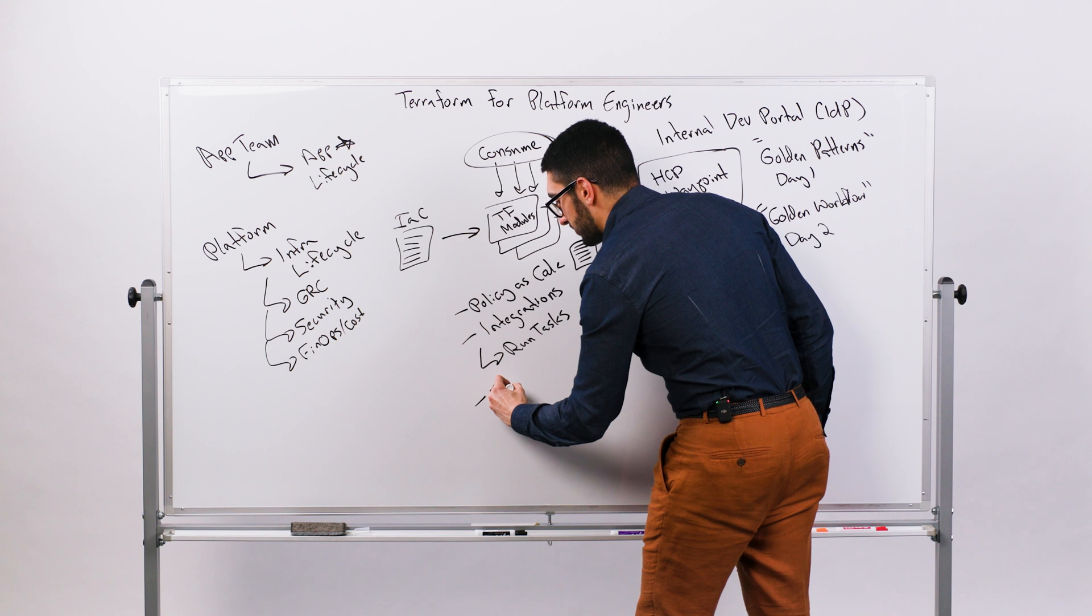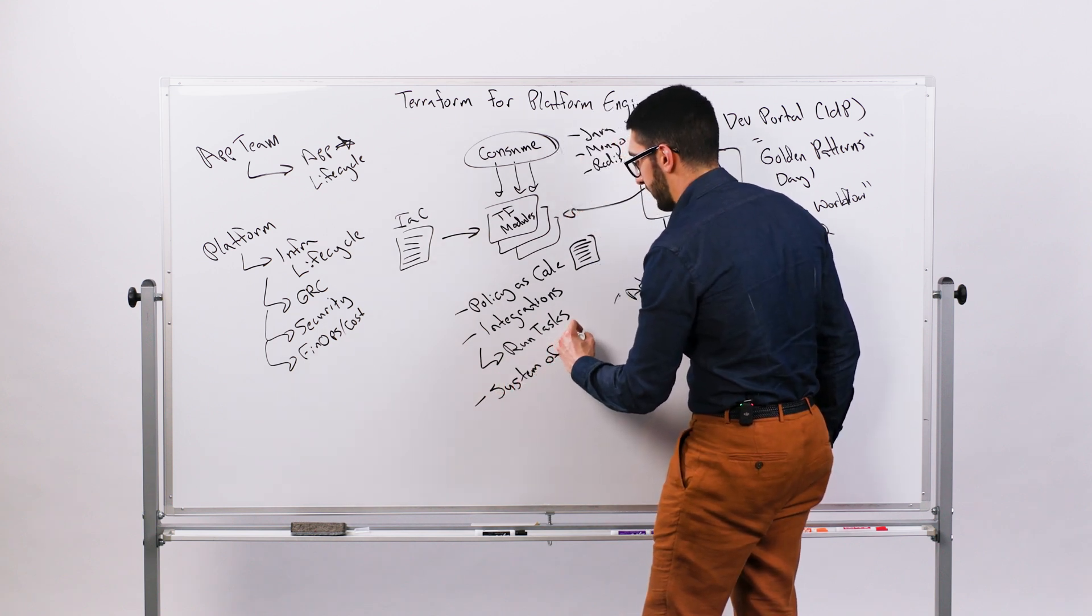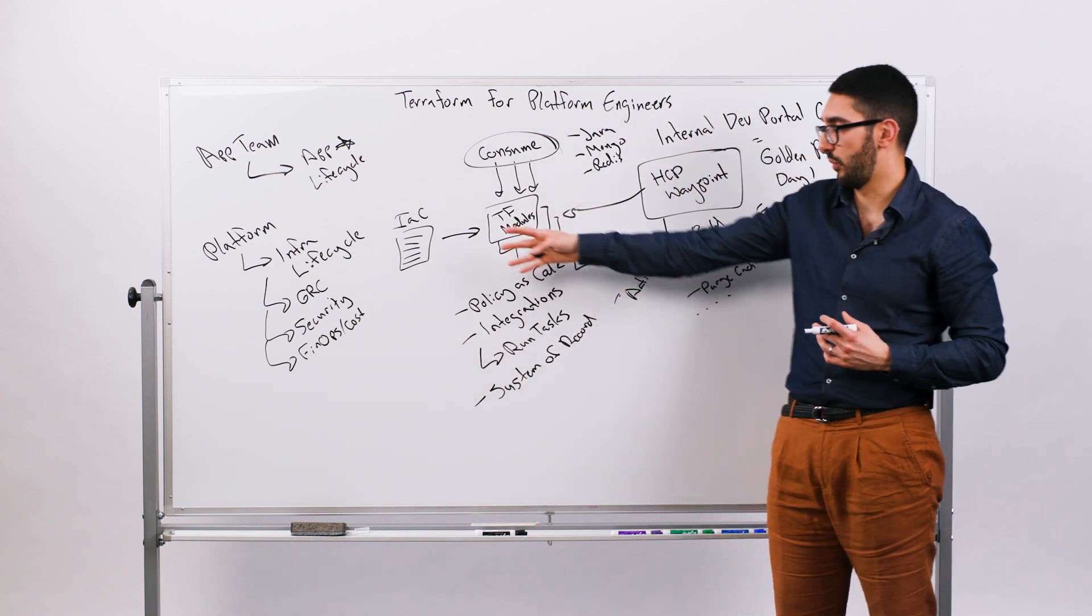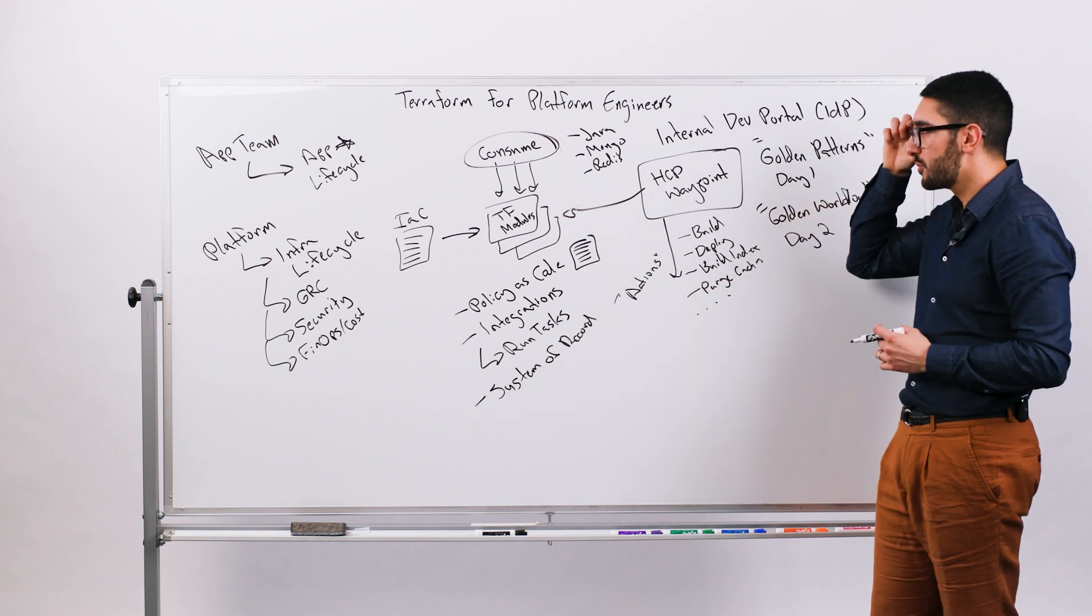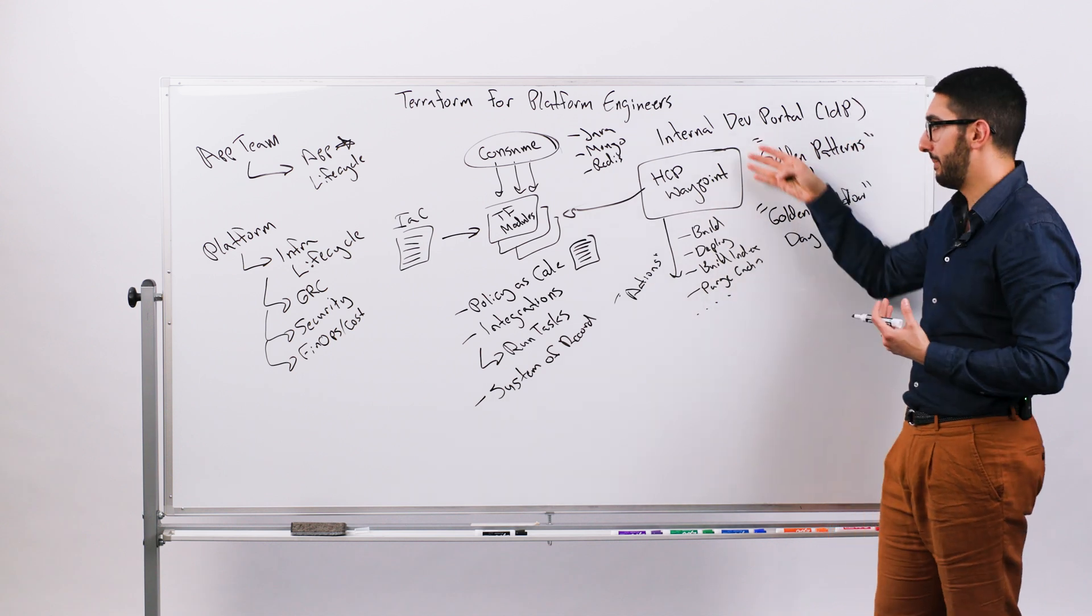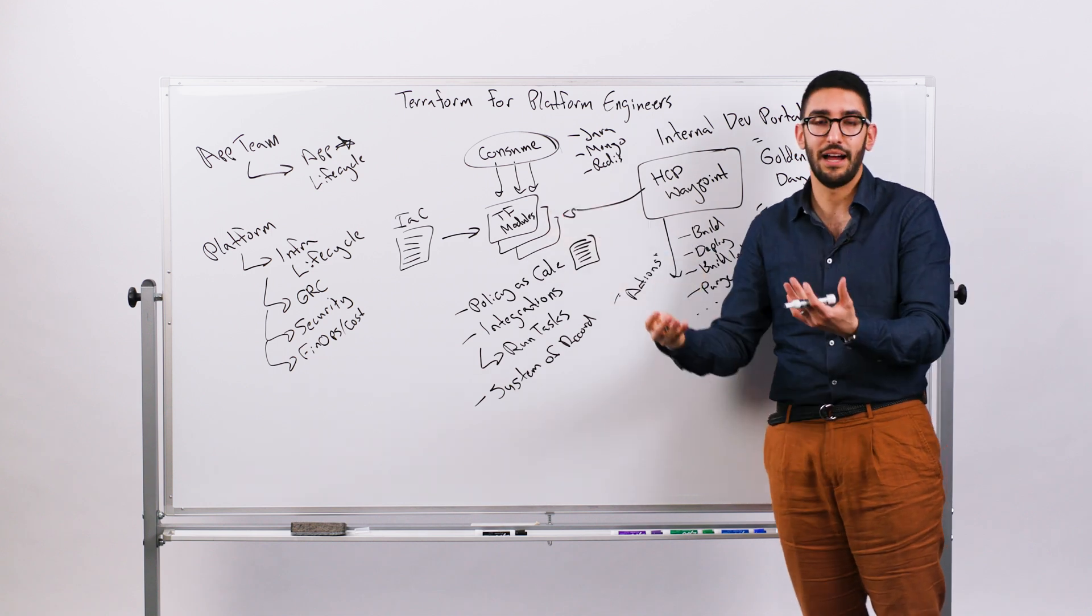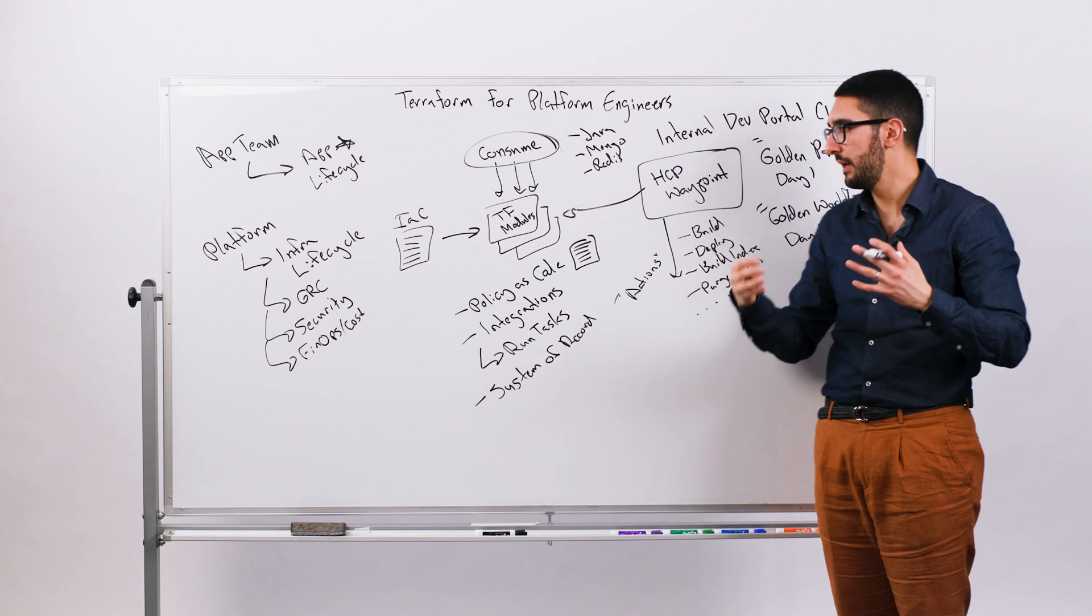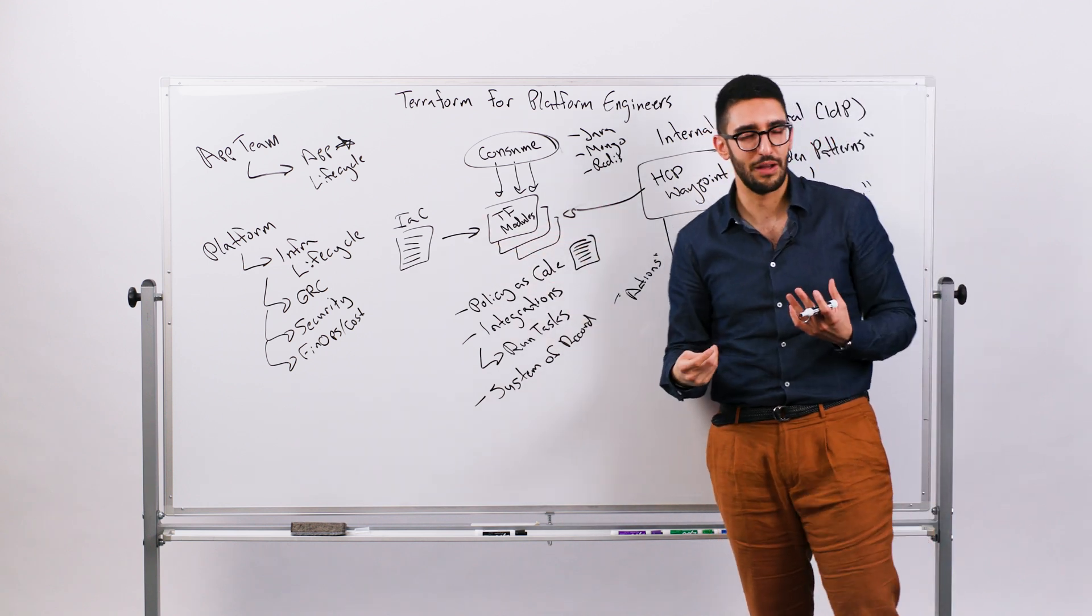And so it's really around enabling those platform teams to create standardization through shared module registries to drive those concerns through policy as code, to have common ways of integration with third-party systems to enforce those controls, to have a common system of record. That's also the other side of this. So I want a system of record so I actually know, what are all the changes everyone made? What's all the infrastructure under management? Do I have visibility to all of my infrastructure to enforce those various concerns? And then ultimately over time as we get more mature, how can we expose that to developers through an internal developer platform?